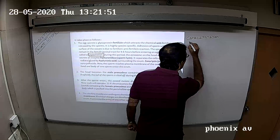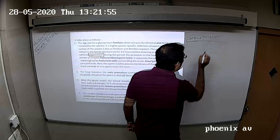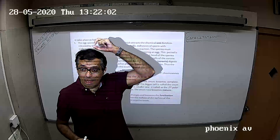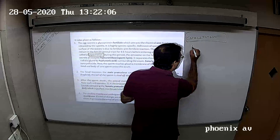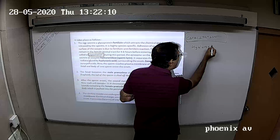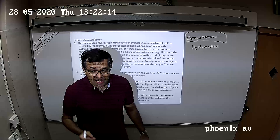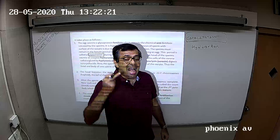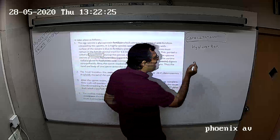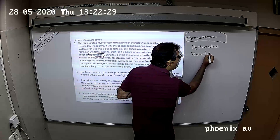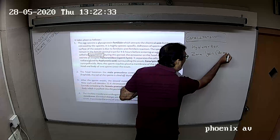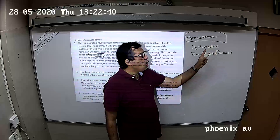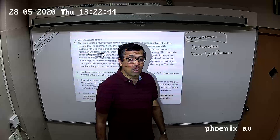During the capacitation period, the acrosome of the sperms produces the enzyme hyaluronidase. It takes 4 to 5 hours for the acrosome to synthesize a sufficient amount of hyaluronidase. The acrosome also produces one more chemical called zona lysin, also called acrosin. The capacitation period of 4 to 5 hours is used to produce hyaluronidase and zona lysin.